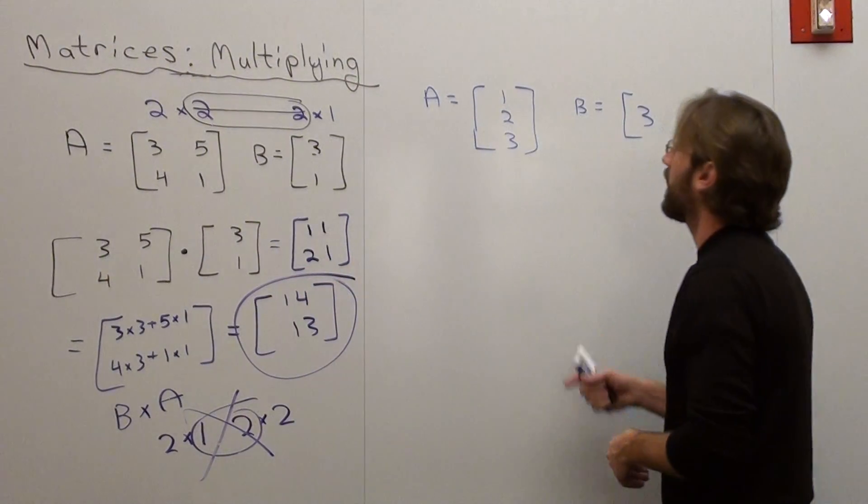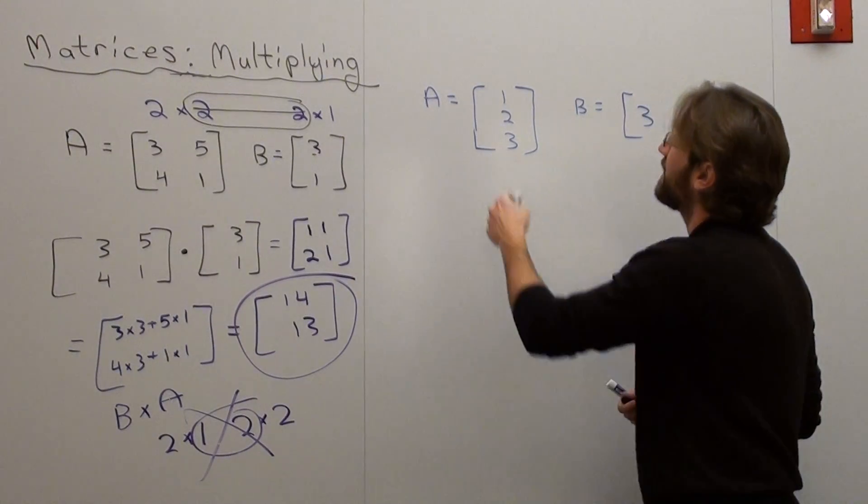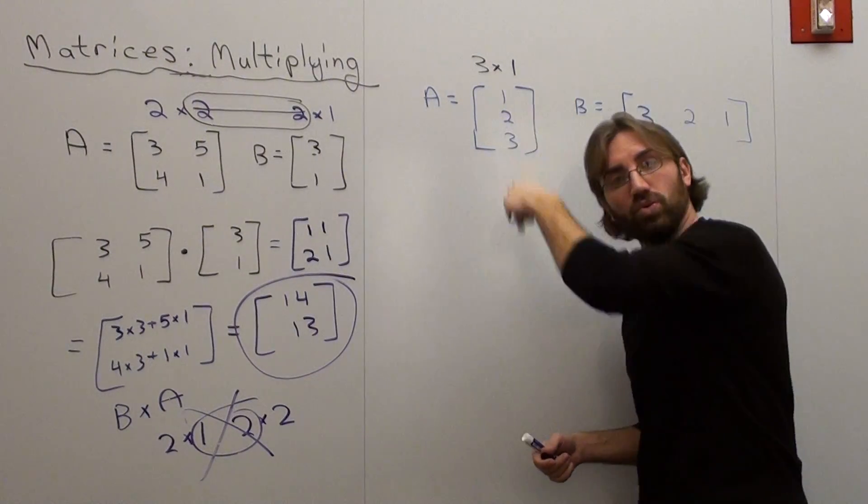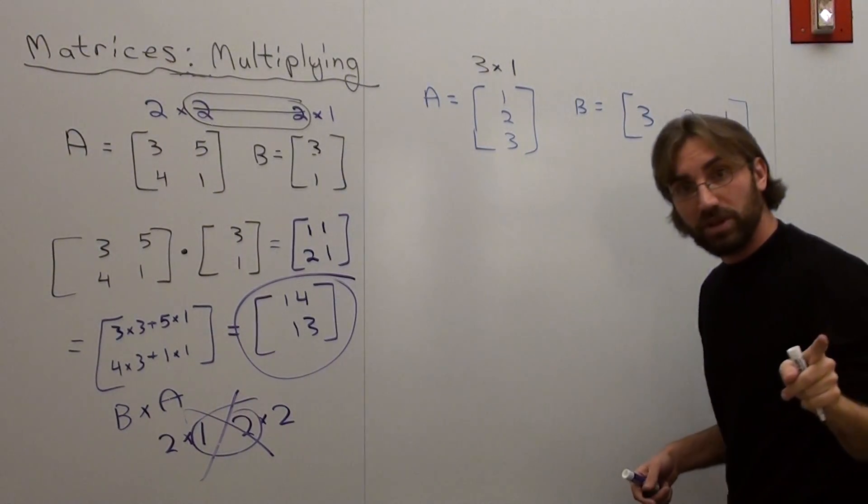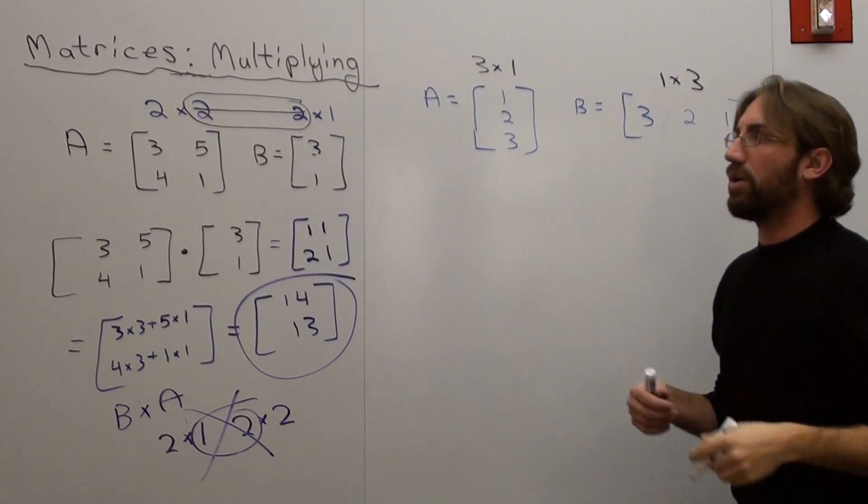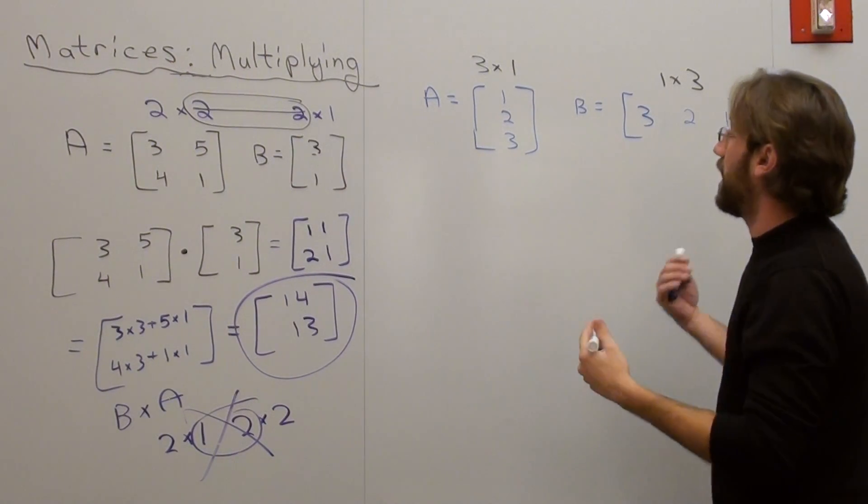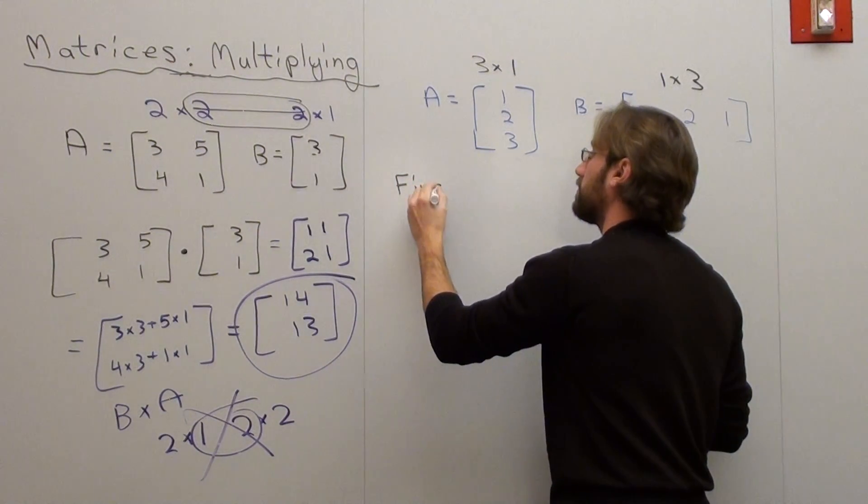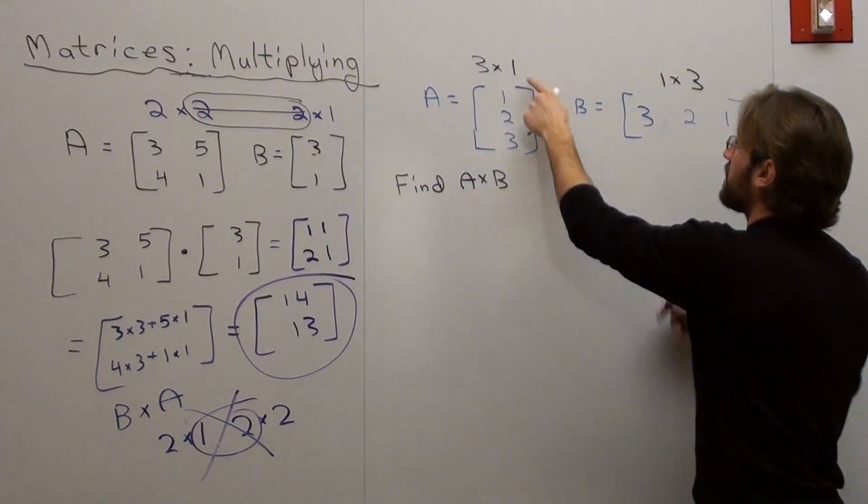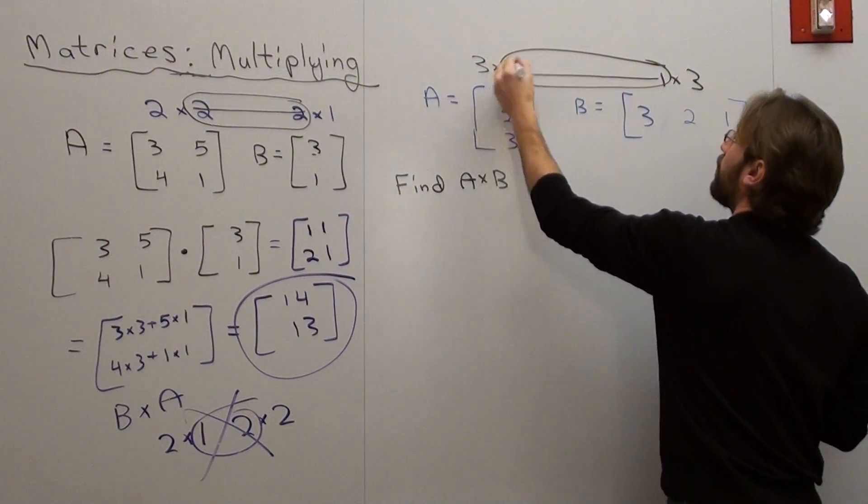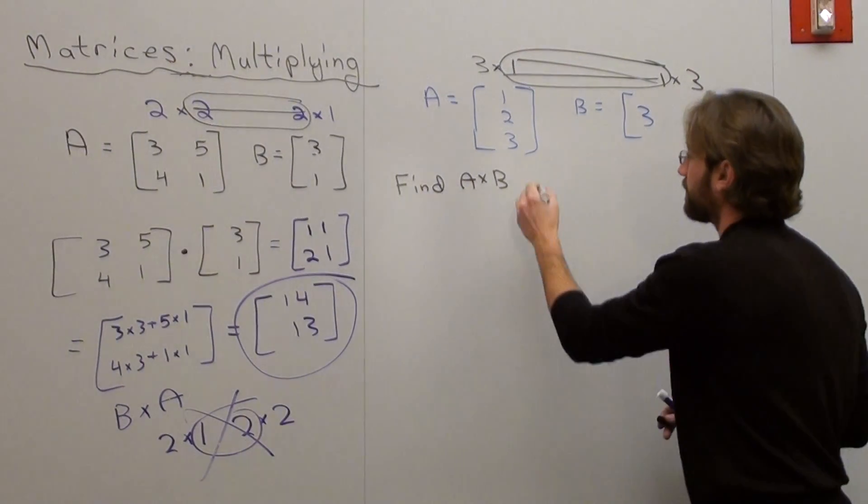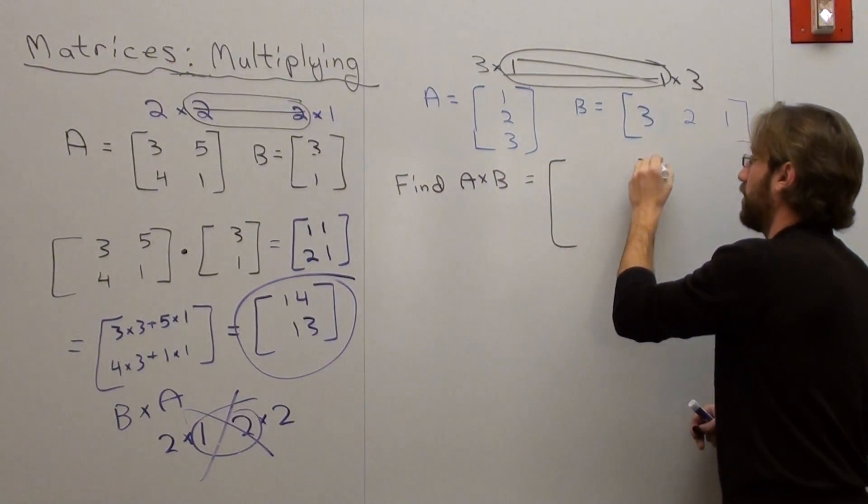We're going to try one more problem. I want to do A times B. This is a 3 by 1 matrix - 3 rows, 1 column. And this is a 1 by 3 matrix - 1 row, but 3 columns. And I want to know if I can multiply A times B. And the answer is yes I can, because these two numbers match. Good. So I'm left with a 3 by 3 matrix, that's going to be my answer.